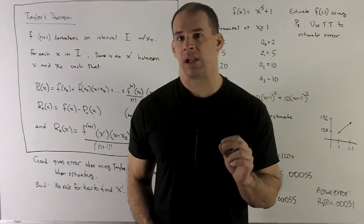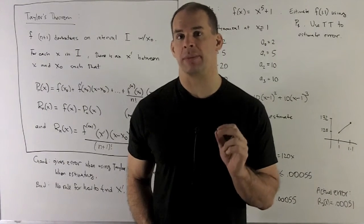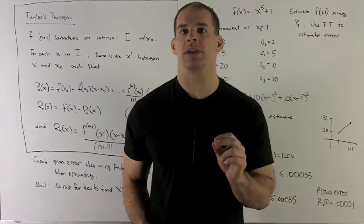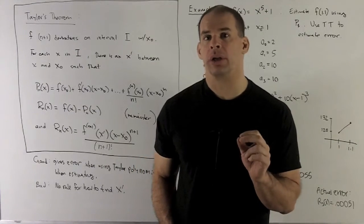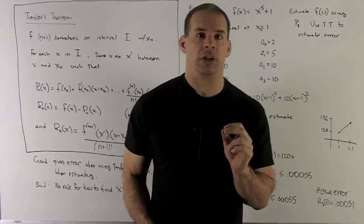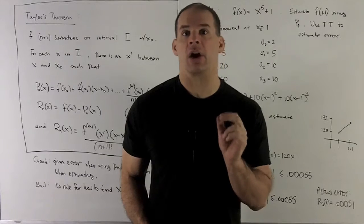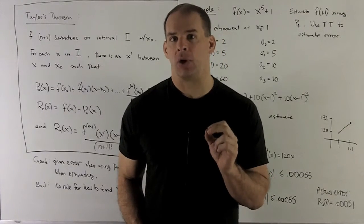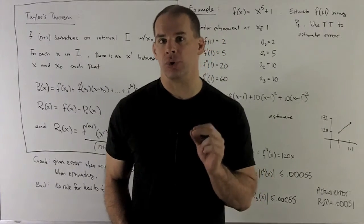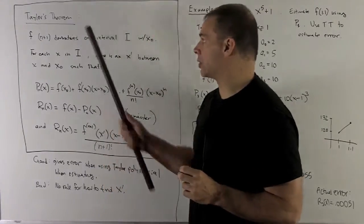Like tangent lines, Taylor polynomials give us a method for estimating functions at nearby points. In the real world, estimates aren't going to be very good if we can't get any control over the error in them. So, for Taylor polynomials, we'll control the error using what's called Taylor's theorem.